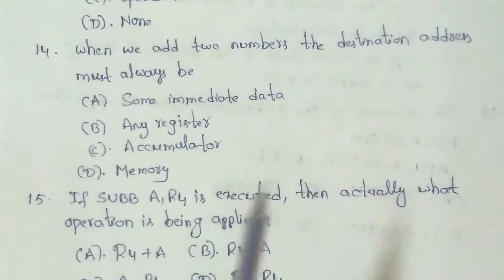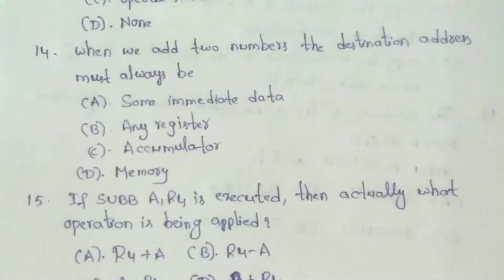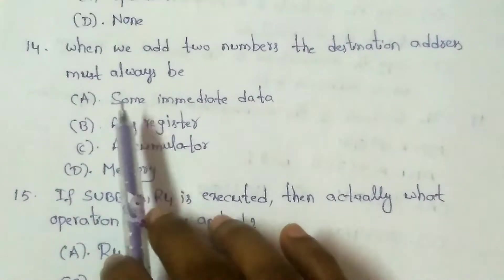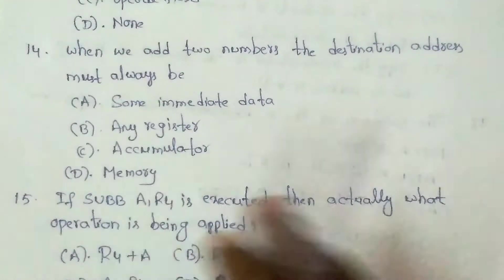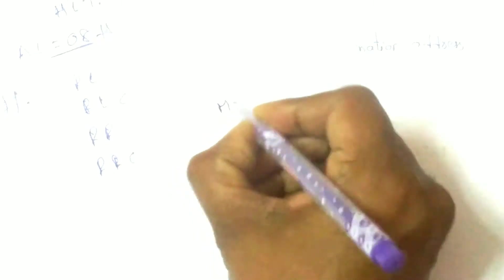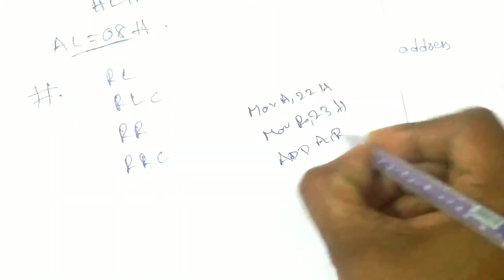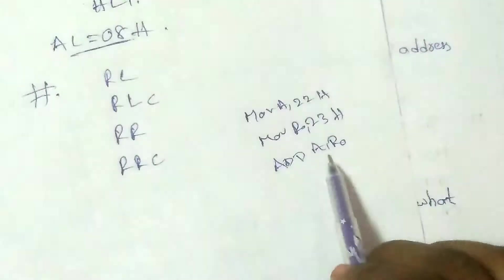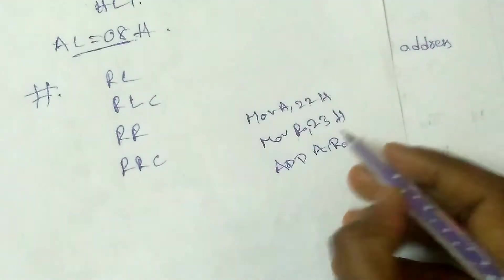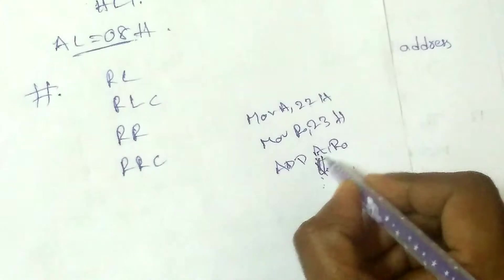Next question: When we add two numbers, the destination address must always be which of the following? Options: A) Immediate data; B) Any register; C) Accumulator; D) Memory. In addition operations, the result is always stored in the accumulator. For example: MOV A, #22H; MOV R0, #23H; ADD A, R0 — the result is stored in the accumulator. The accumulator is always the destination. Answer: option C, accumulator.